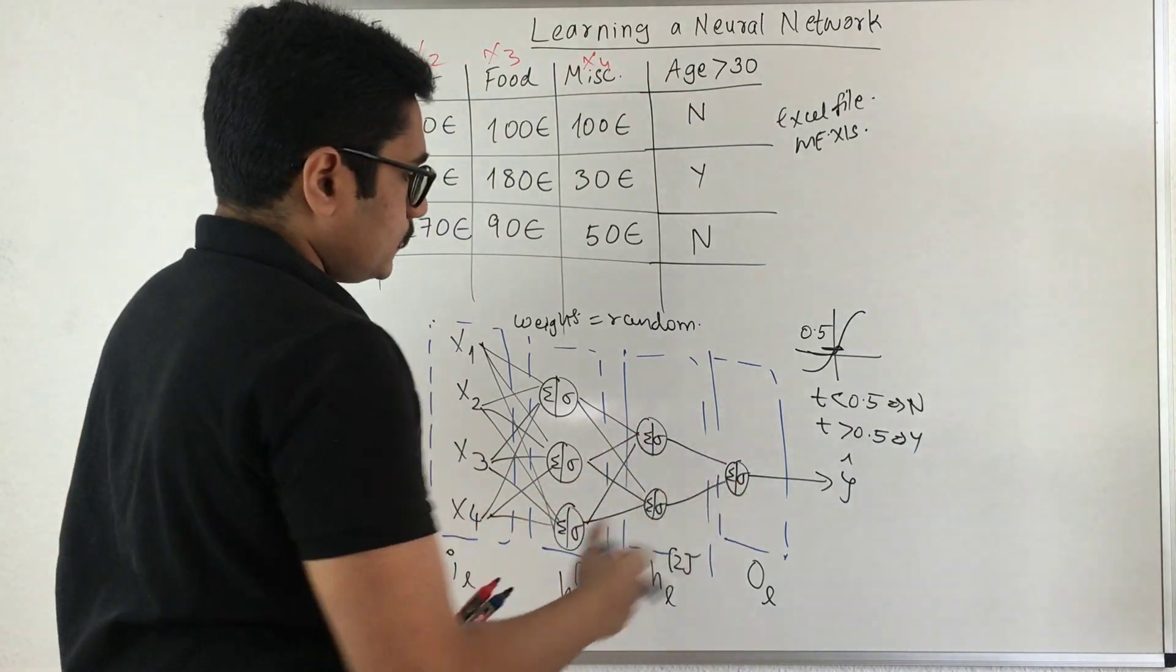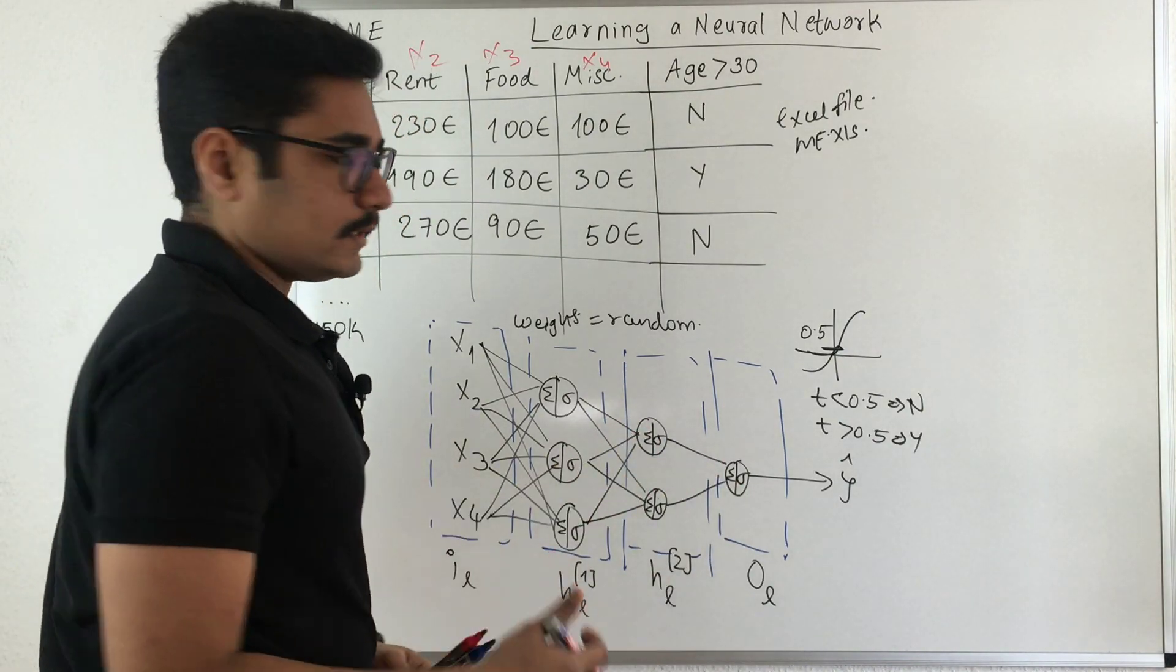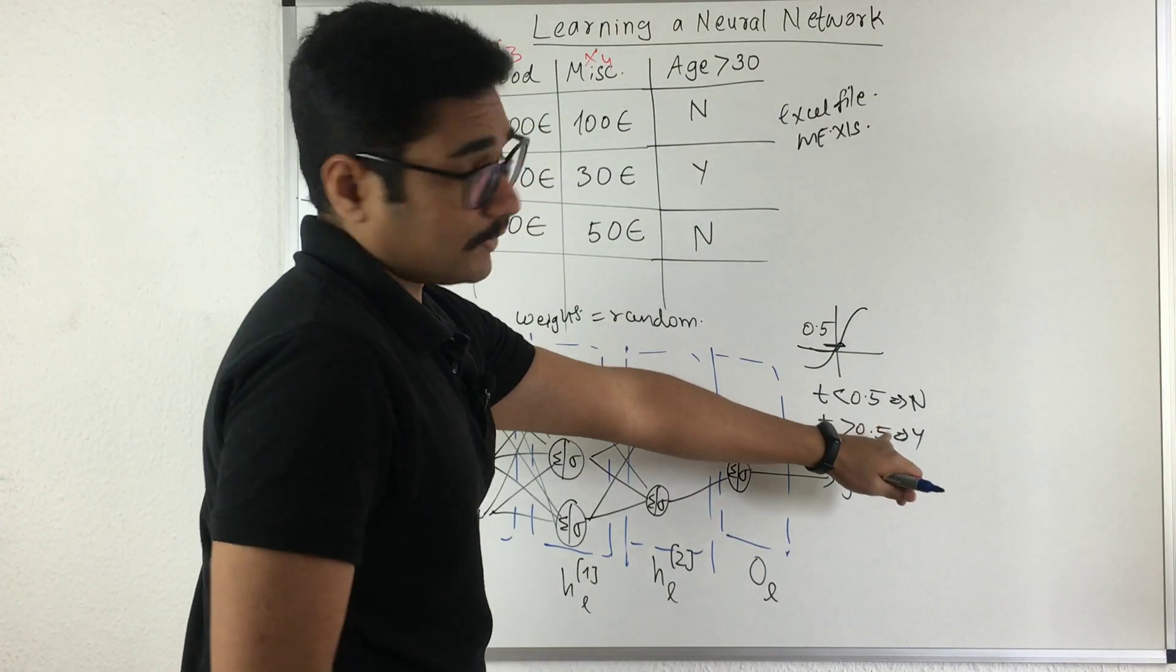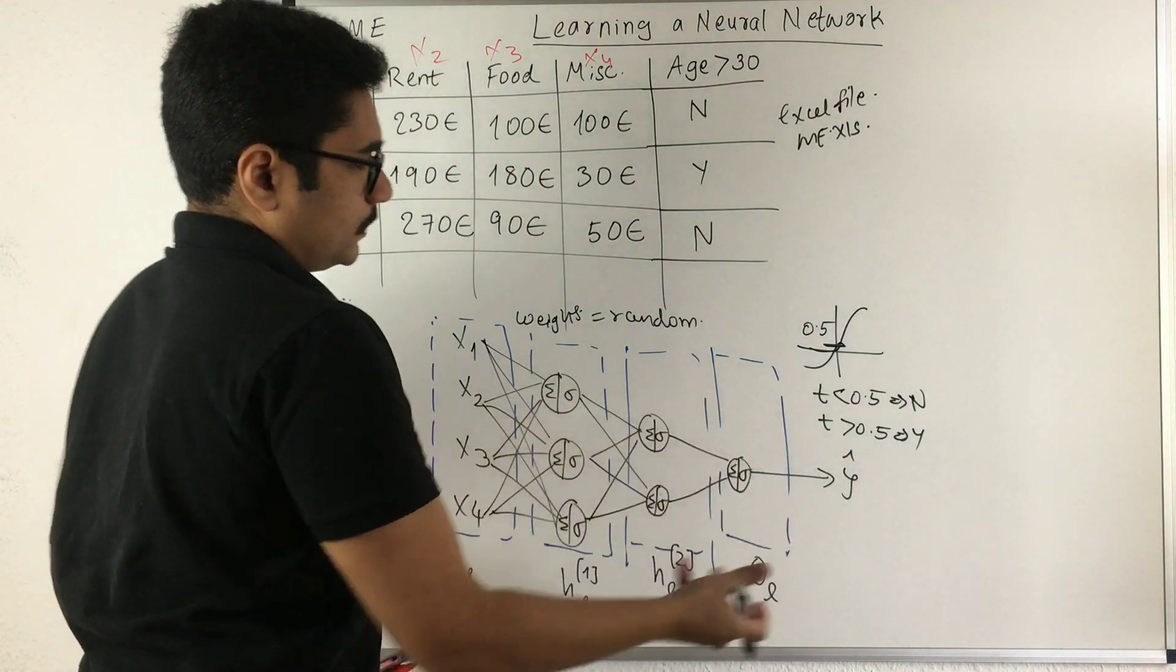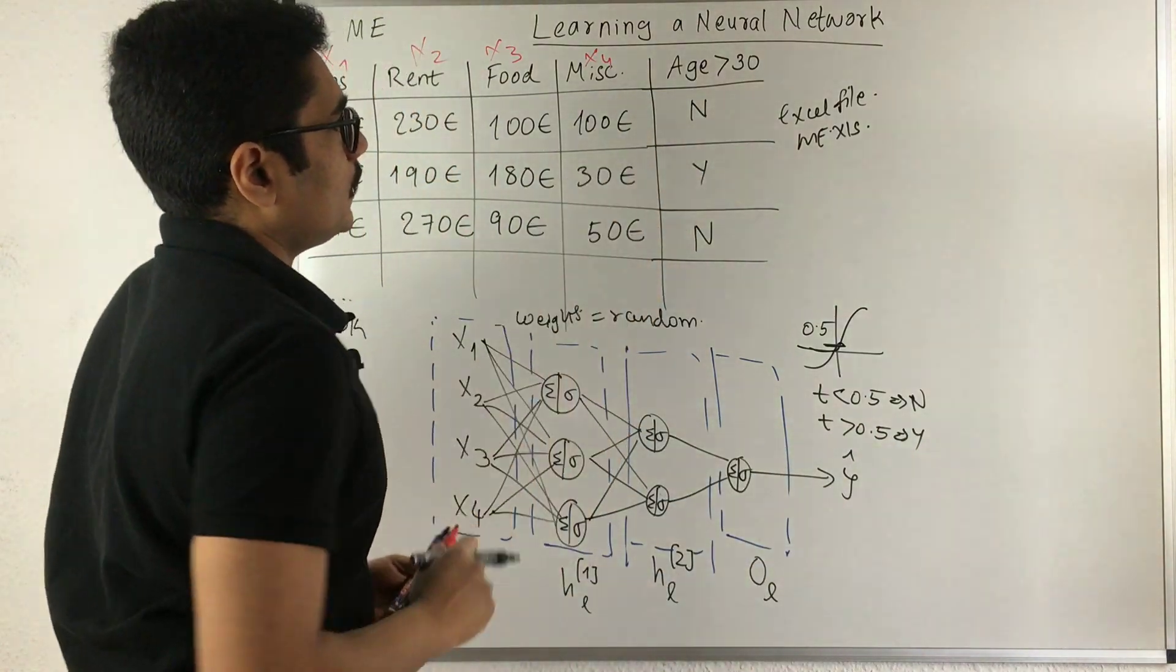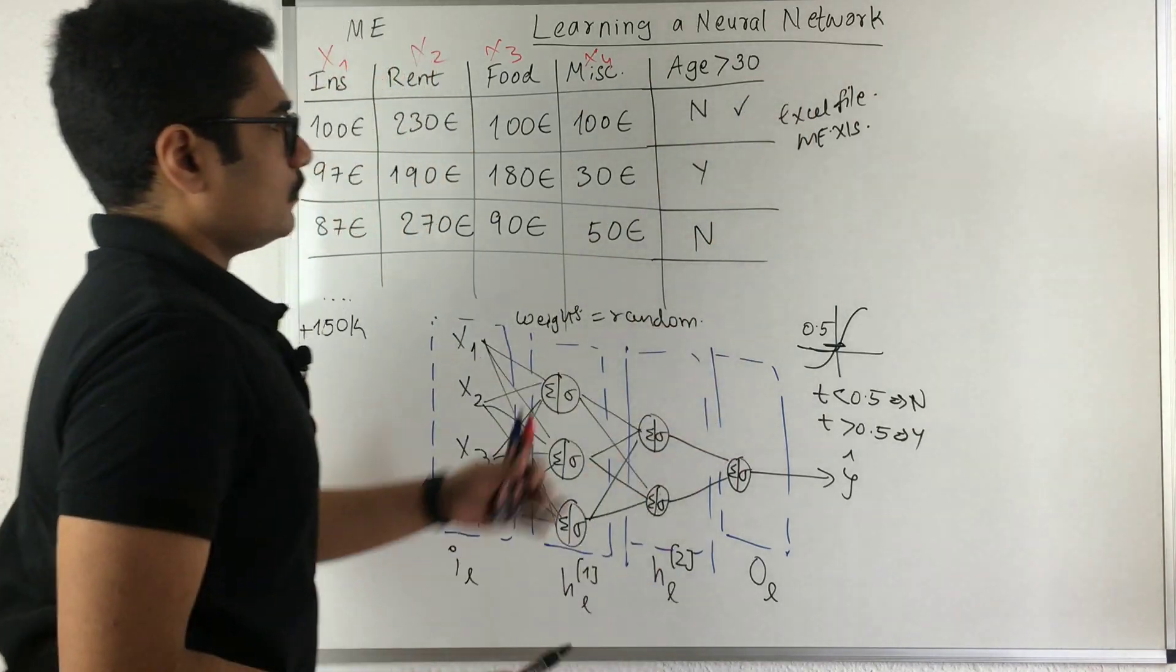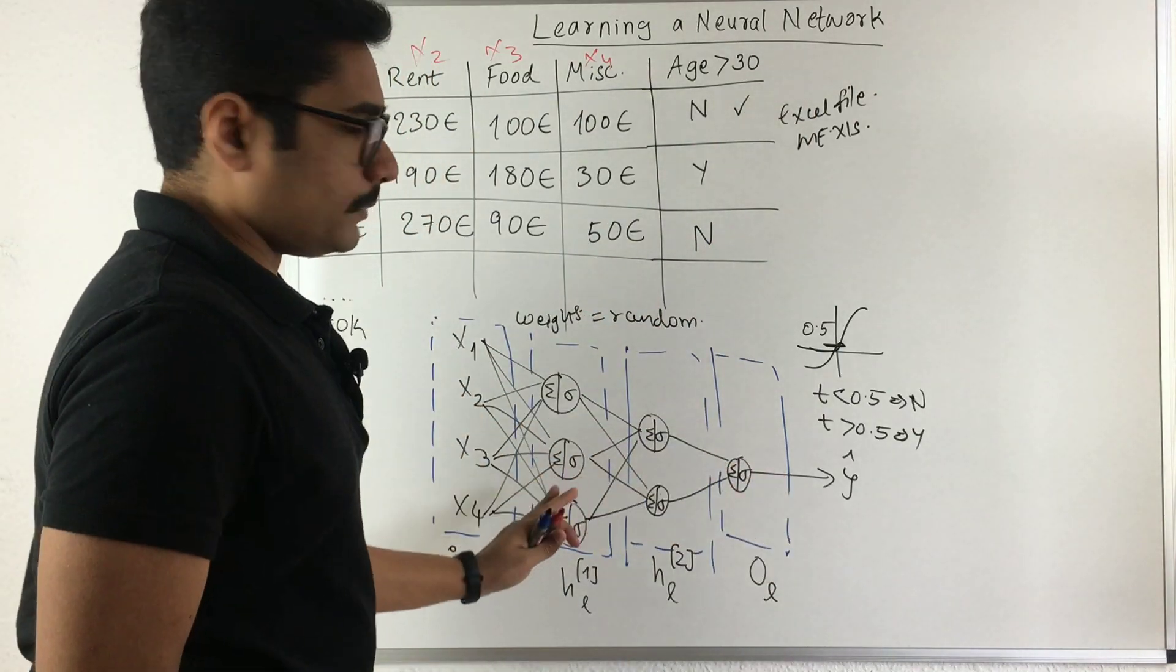Say in the first particular output, what we get is less than 0.5 - that is the threshold - after this computation. And we check with our dataset, so it's correct. We need not adjust the weight for that particular iteration.